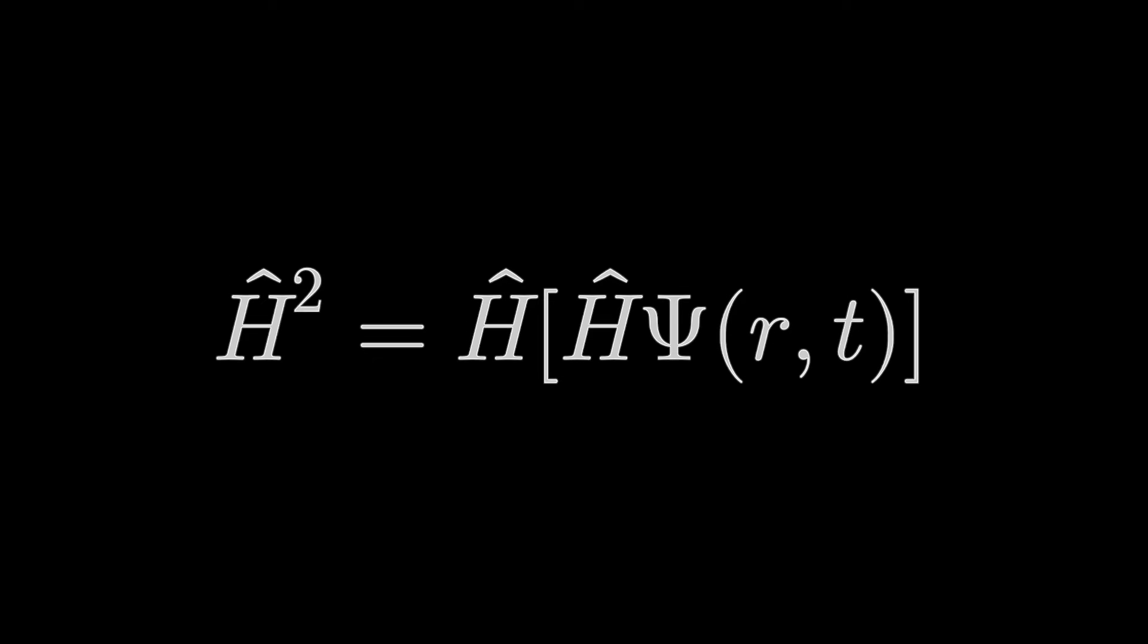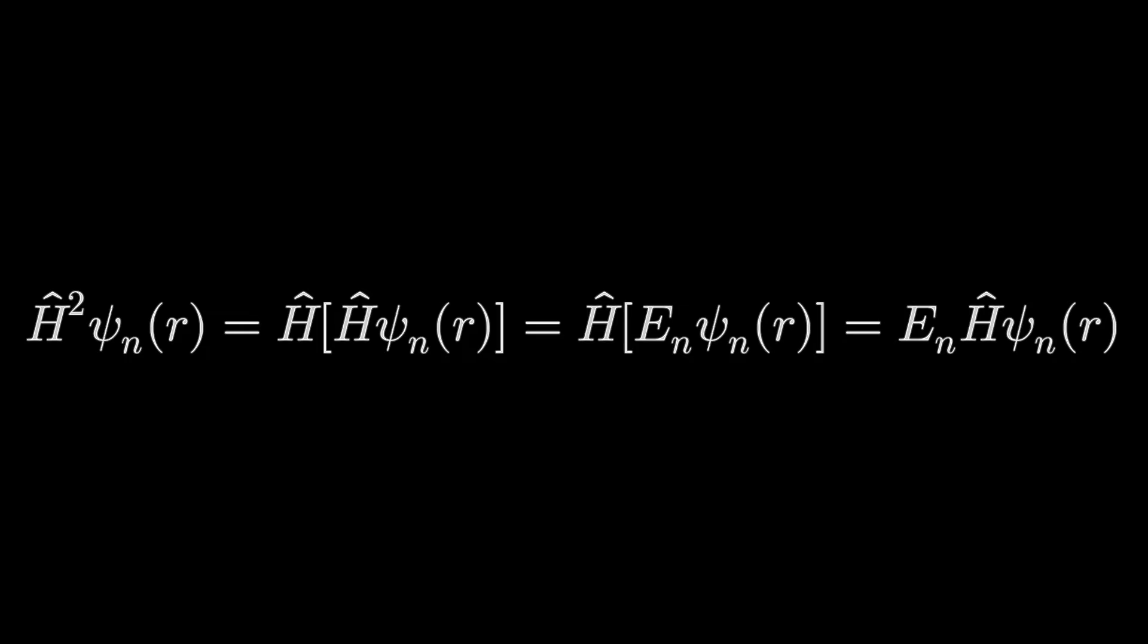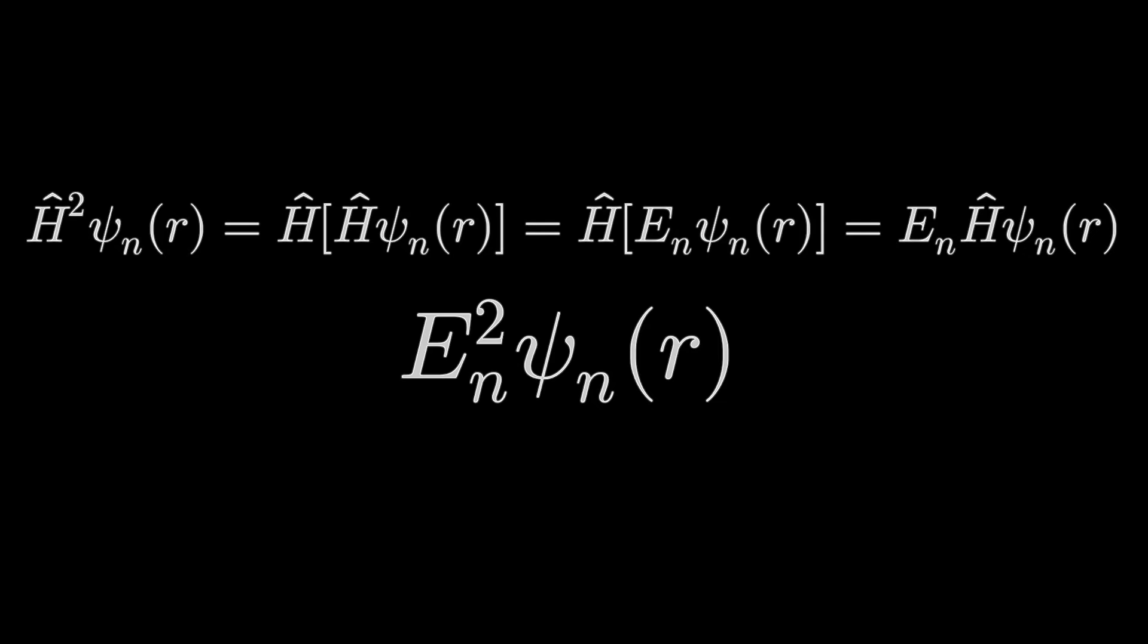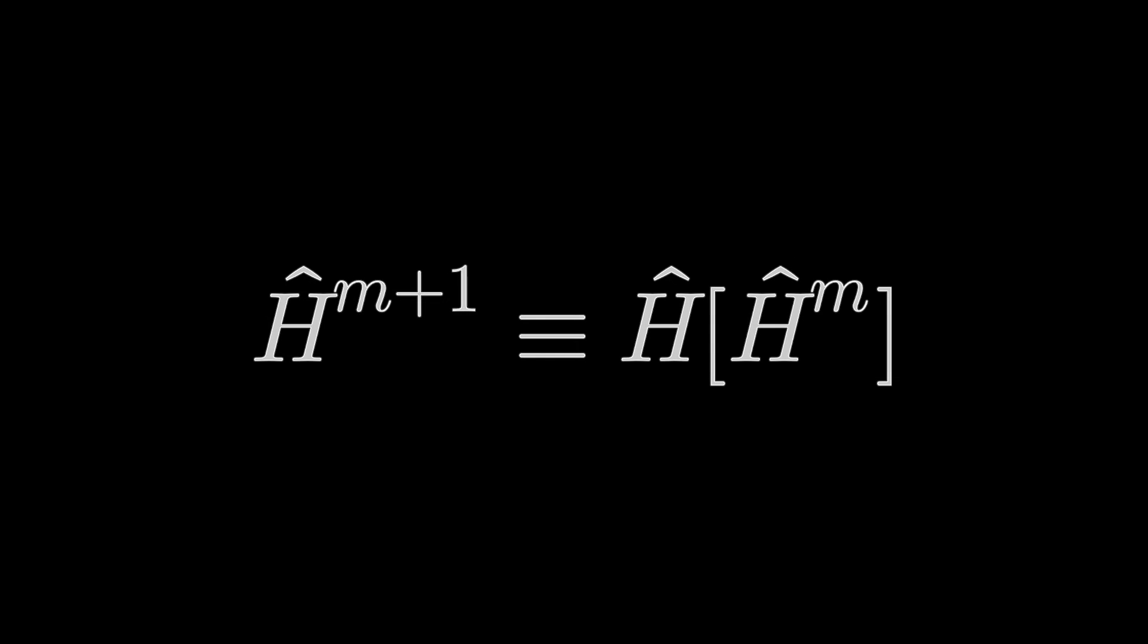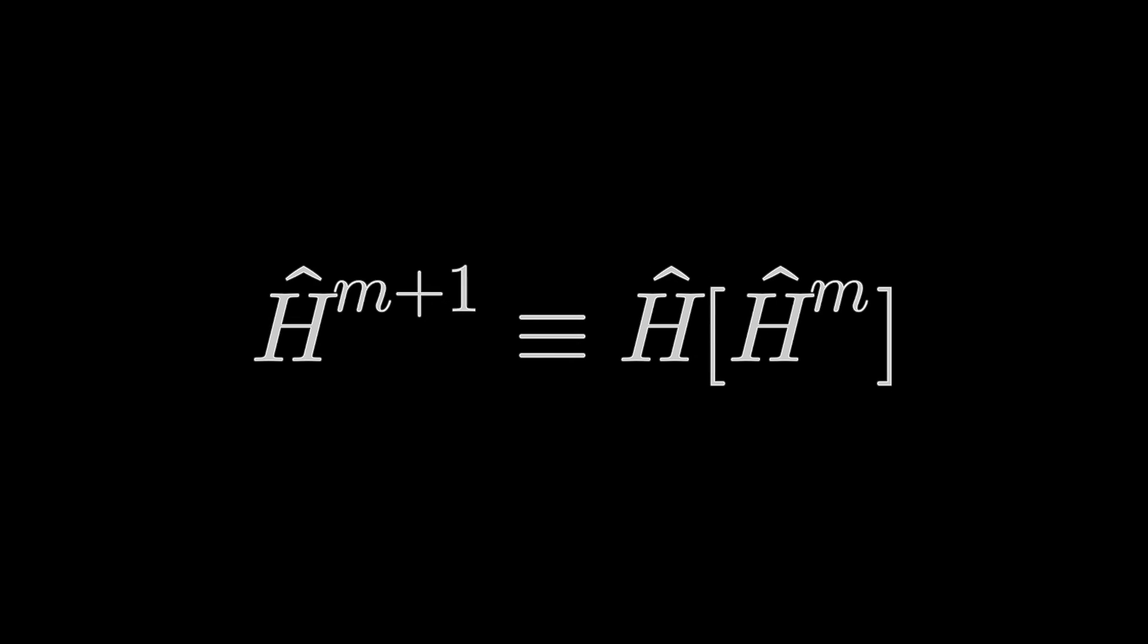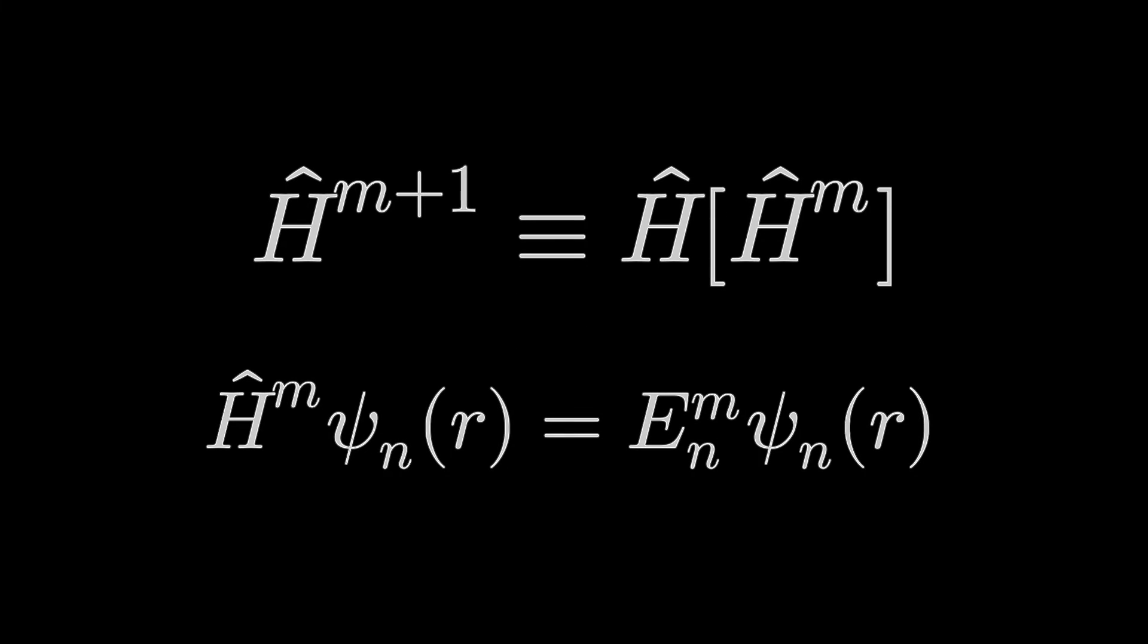Then for ψn(r), we get this following expression, which is equal to, algebraically, En squared ψn(r). Hence, we can deduce this definition. H-hat to the power of m plus 1 is equal, by definition, to H-hat acting on H-hat to the power of m. Then we have this final expression, where H-hat to the power of m acting on ψn(r) equals the nth energy state to the power of m times ψn(r).